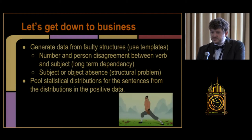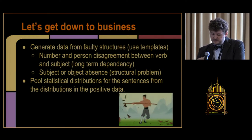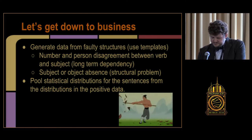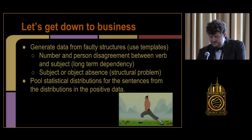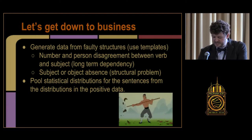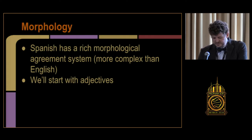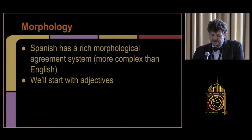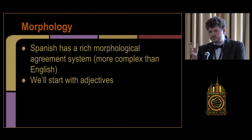We need to generate faulty structures that A) look enough like natural language so they modify our neural network's recognition only at relevant points, and B) are ones where we know exactly where the damage is. I'm going to do number and person disagreement between subject and verb, adjective disagreement, and in the future, subject or object absence, which is a structural problem. Most of the errors I've come up with pertain to morphology — the area of linguistics where we study how words change inside to adapt to the syntax of the sentence.